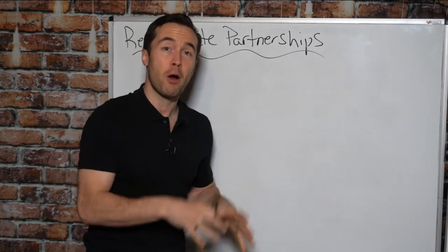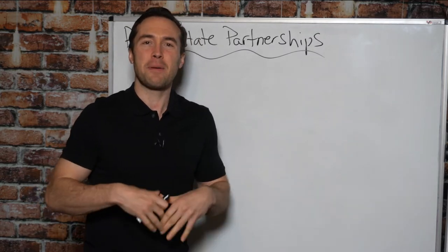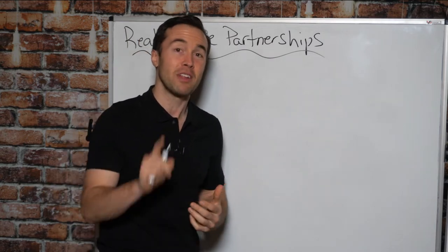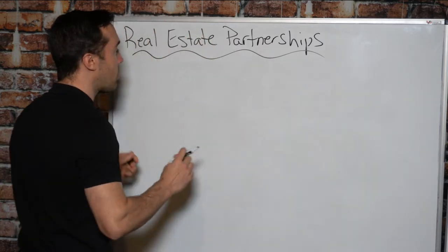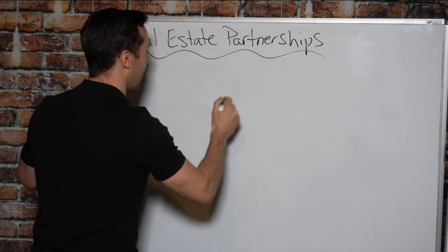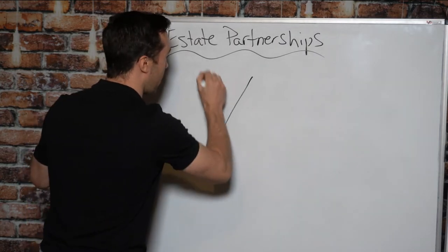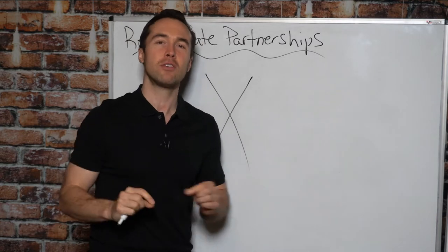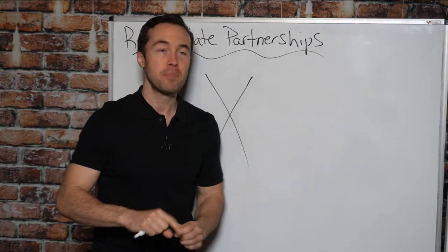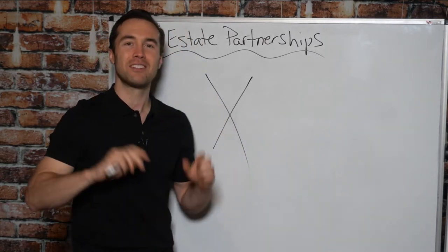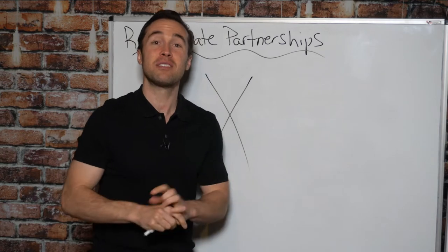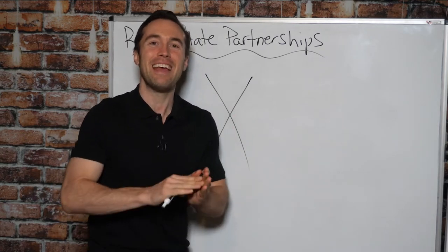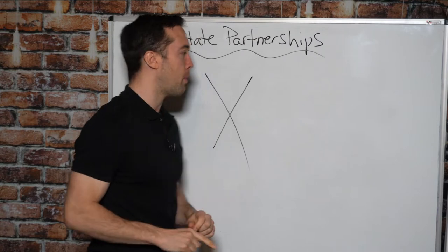So when we talk about partnerships, what actually is a partnership made of? Why would you partner with somebody? To answer that question, let's talk about the real estate matrix — at least that's what I call it. There are four components to every single real estate deal. If one of these four components does not exist, the deal does not happen. Every single real estate deal in history has had these four components.